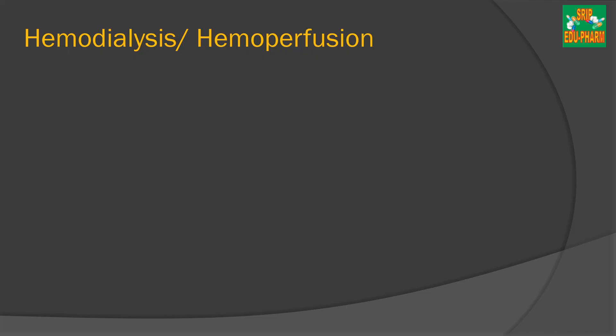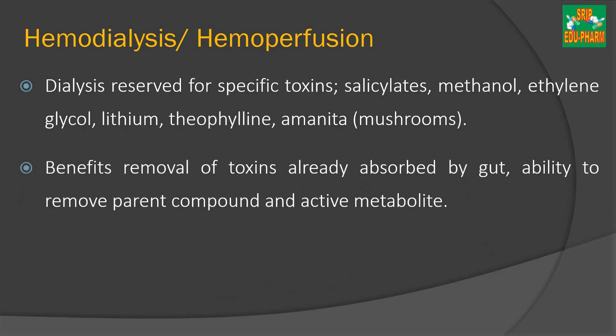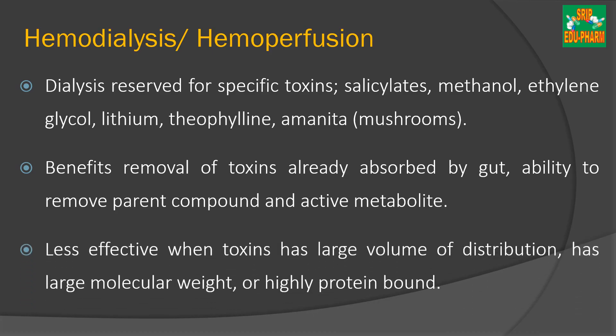Next is haemodialysis or haemoperfusion — another method to remove toxins from the blood. Dialysis is employed for specific toxins including salicylates, methanol, ethylene glycol, lithium, and theophylline. It helps remove toxins already absorbed from the gut into systemic circulation and can remove both parent compounds and active metabolites. However, this method is less useful when toxins have a large volume of distribution, as they can rapidly affect organs. It is also less effective if the toxins have large molecular weight or are highly protein-bound.